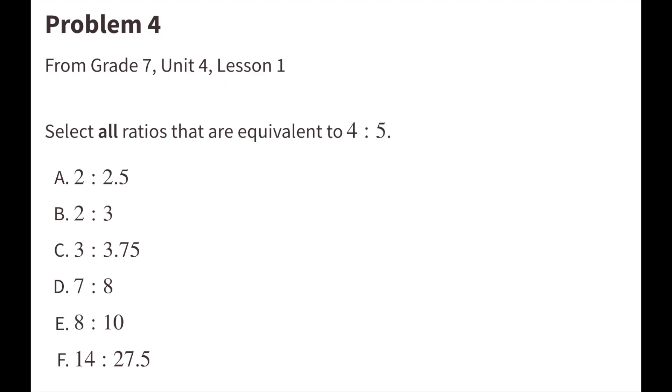Number 4. Select all ratios that are equivalent to 4 to 5. 4 divided by 2 and 5 divided by 2 equals 2 to 2.5 or 2 to 2 and 5 tenths.